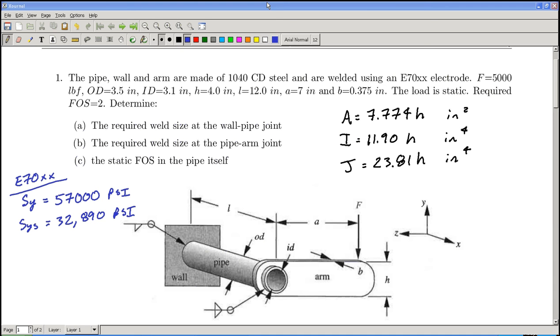That weld size being required is based on factor of safety of two against yield, and right here are the yield properties for the rod itself. This rod is quite a bit weaker than the base material, so you definitely want to base the weld calculation on the rod itself.